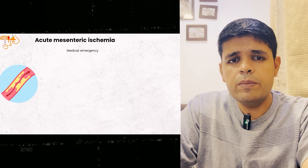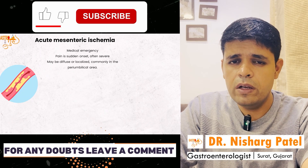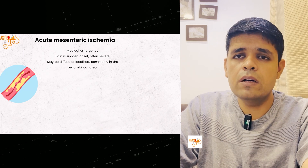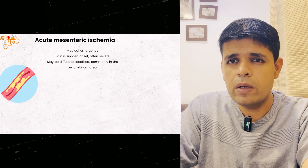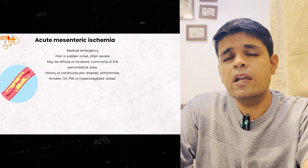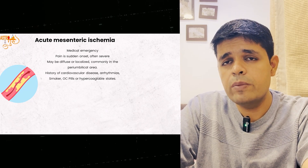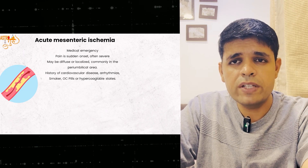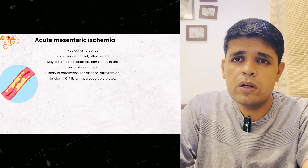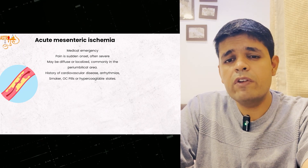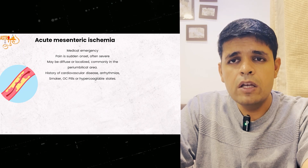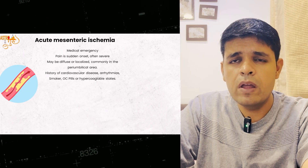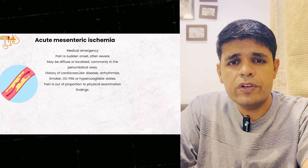Mesenteric ischemia is a medical emergency — pain is very sudden in onset and severe. The patient is tossing on the bed. Initially pain is diffuse, but as time passes it can localize to the peri-umbilical area. The patient will have history of rheumatic heart disease, arrhythmia, dilated left atrium, left ventricular aneurysm from past MI, smoking, oral contraceptive pill use, or history of hypercoagulable states. In such a patient presenting with sudden severe diffuse abdominal pain, always think of mesenteric ischemia.